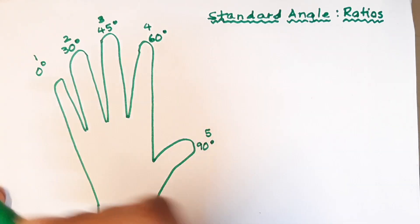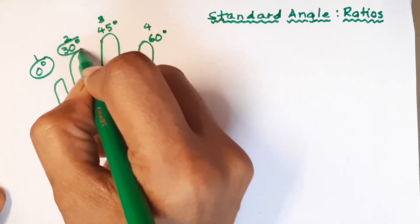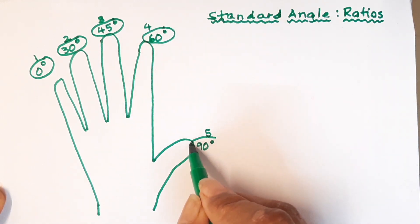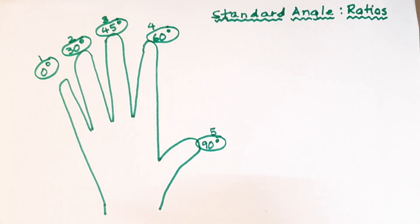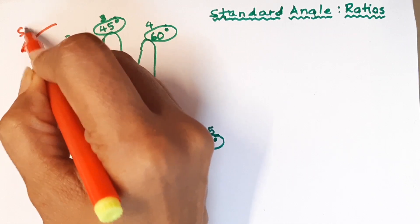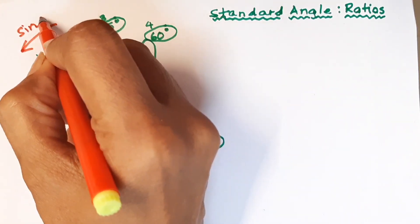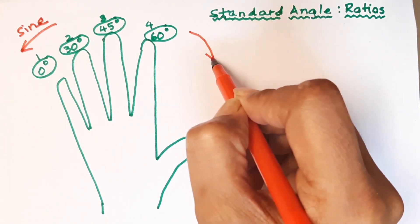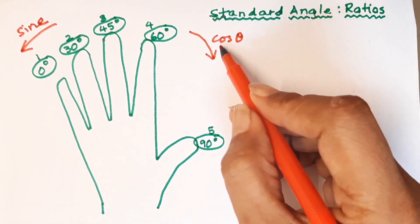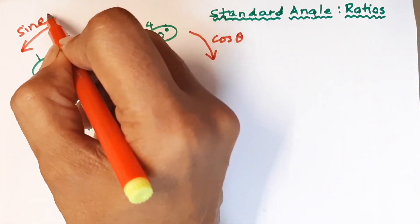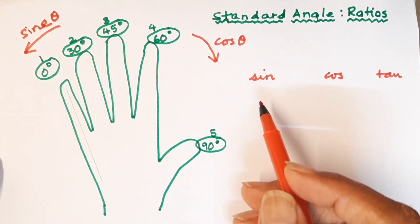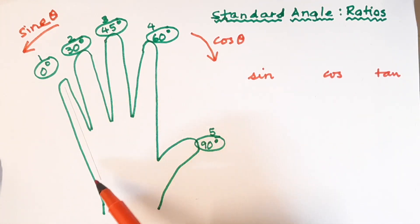So we need to remember this order: zero, 30, 45, 60, and 90 degrees. Now, in order to find the sine, we will go towards the left — this is for the sine ratio. And if we have to find the cosine, we will go on the right-hand side. So if we need cos θ, we go on the right; if we want sin θ, we go on the left.